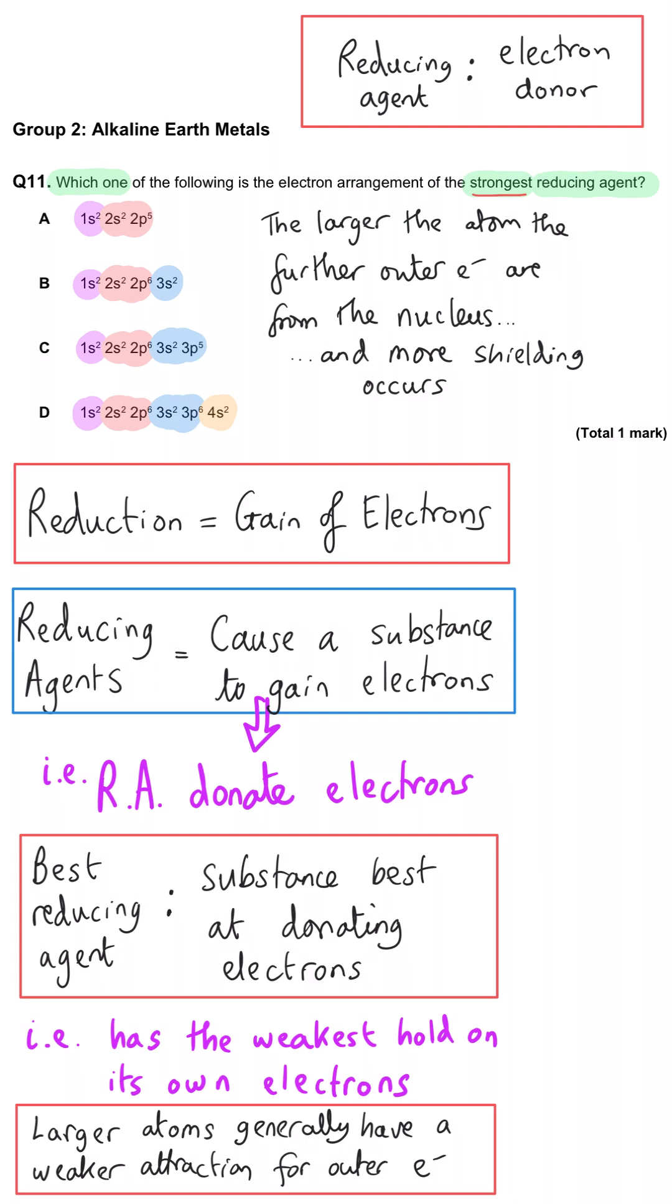So that means we're looking for the one with the most electron shells, which means the answer is going to be D. We've got the outer electrons being lost from the fourth energy level, which is much easier than the third or the second.